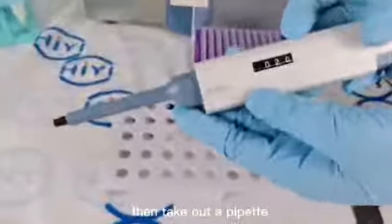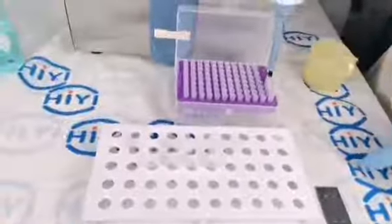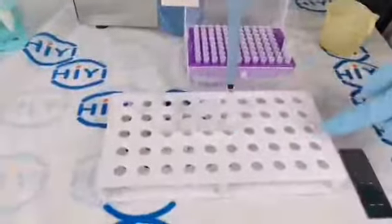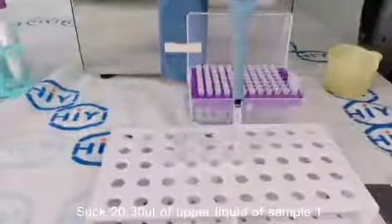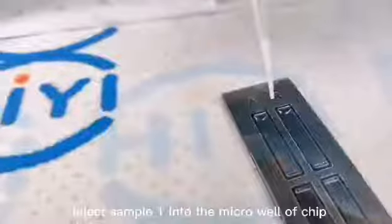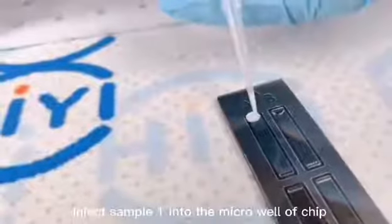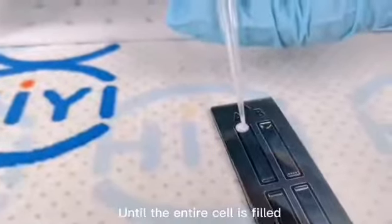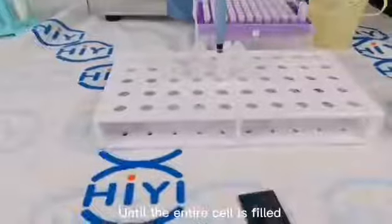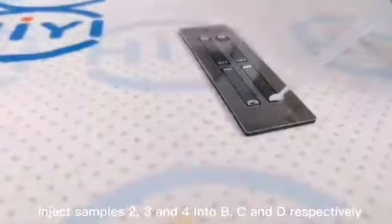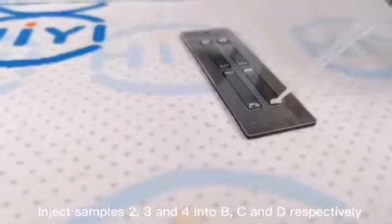Then take out the pipette. Insert the pipette tip. Suck 20 to 30 microliters of upper liquid of sample one. Inject sample one into the microwell of the chip until the entire cell is filled. Inject samples two, three, and four into B, C, and D respectively.